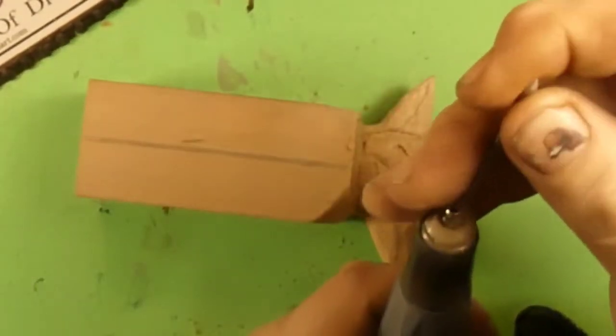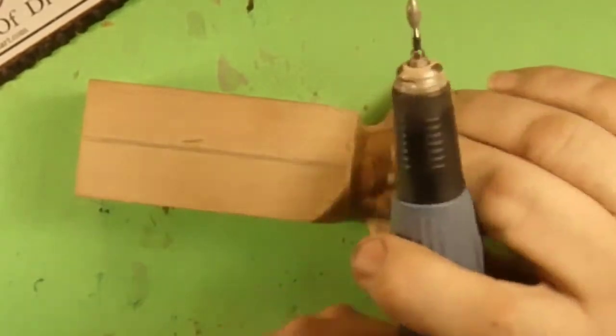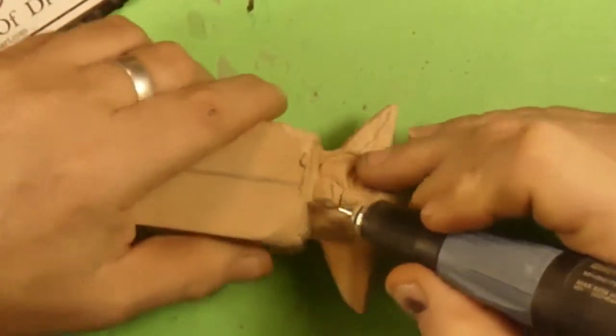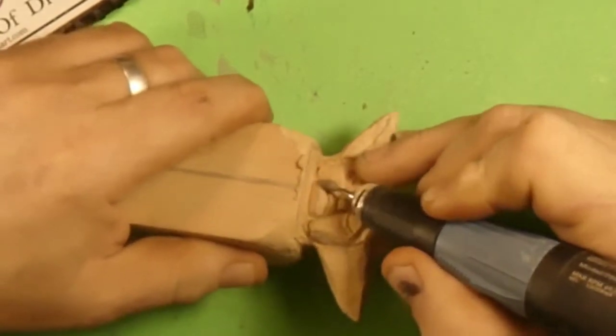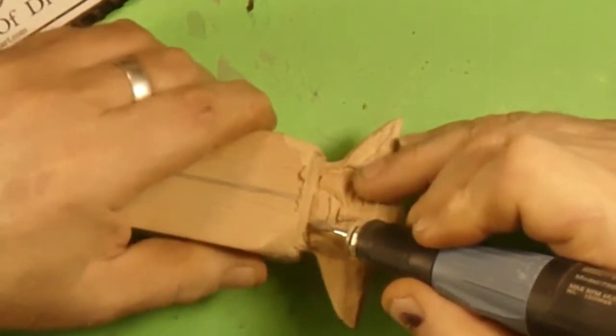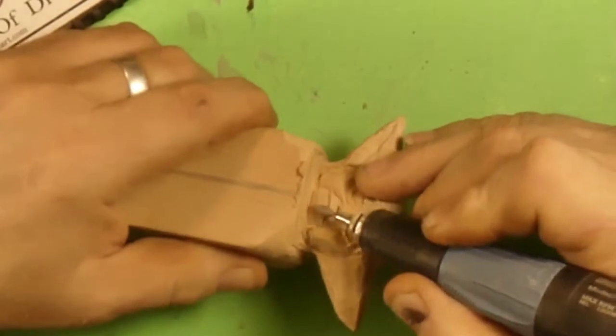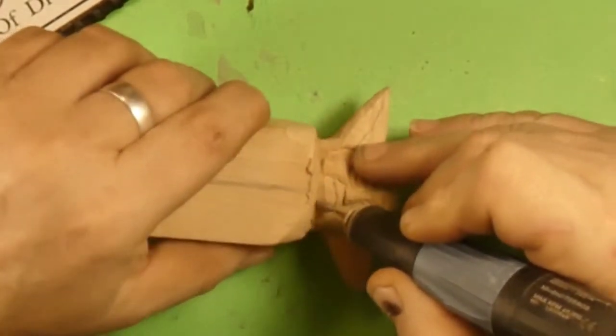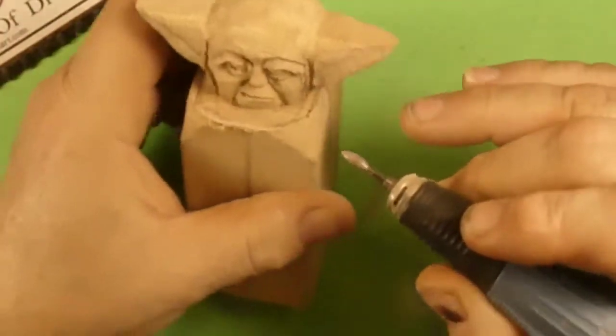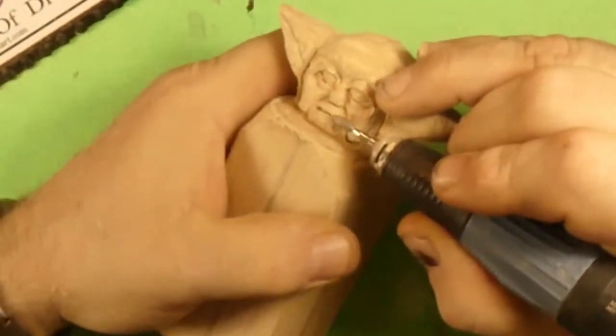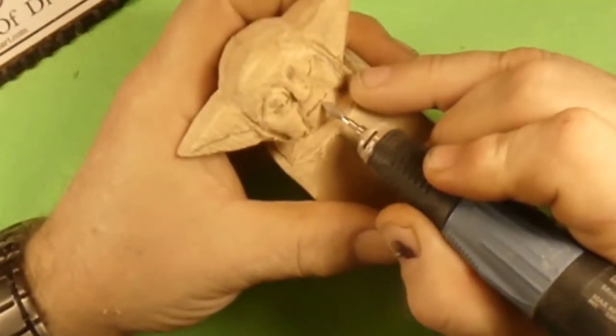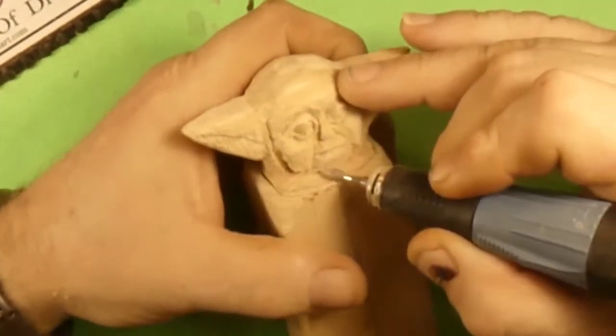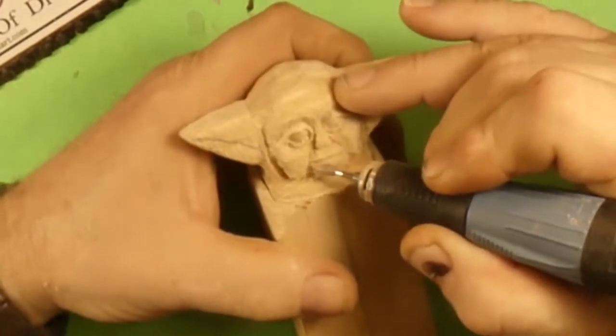Right now we're going to change over to a ruby burr. It's 3/32 inch. I buy these from mountainwoodcarvers.com and I use these to do a lot of shaping. They leave a real nice finish behind, like a sanded finish.